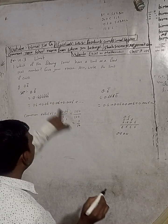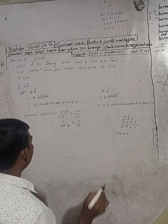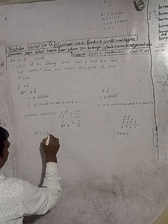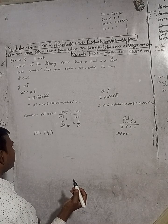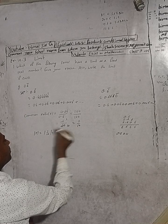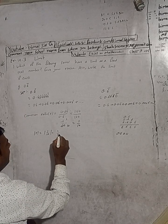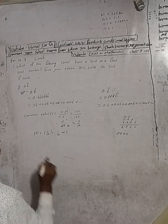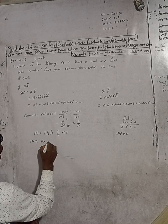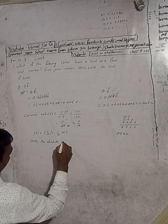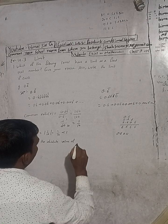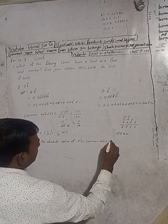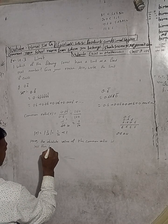The common ratio r is equal to 1/10, which equals 0.1. The absolute value (modulus) of r is 1/10, which is 0.1 — less than 1. Since the absolute value of the common ratio is less than 1, less than unity, the series converges.